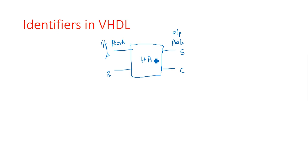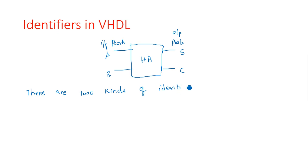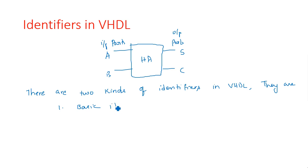There are some rules to define identifiers in the entity. Basically, there are two kinds of identifiers in VHDL programming: the first one is a basic identifier, and the second one is an extended identifier.